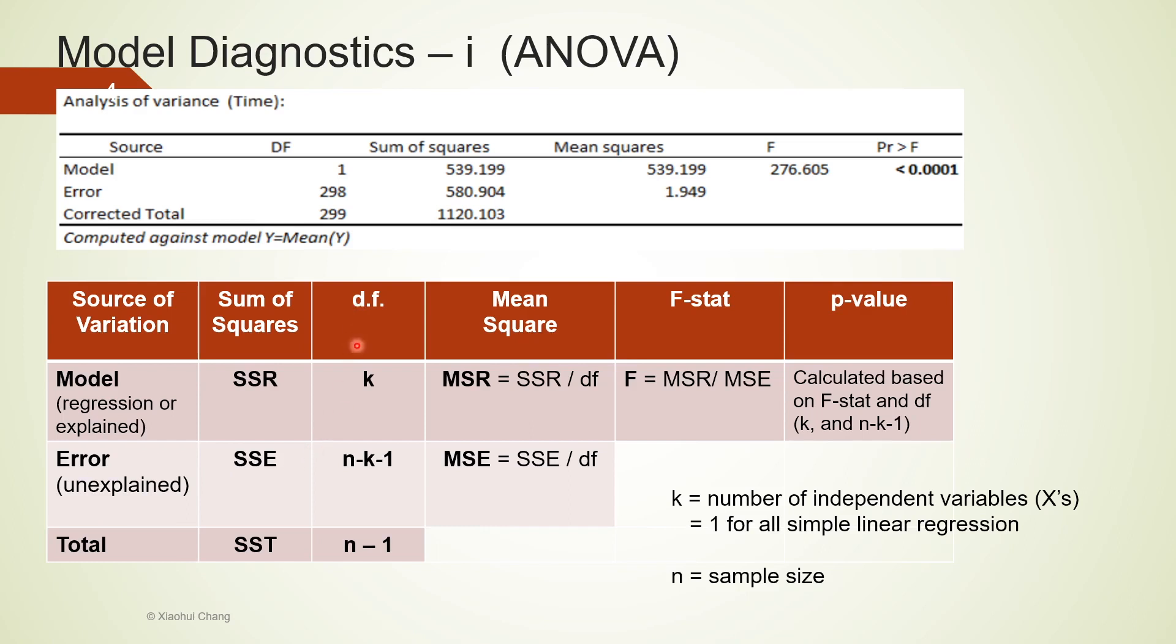Next, for degrees of freedom. Degrees of freedom for total is n minus 1, so that's sample size minus 1. For our example, that's 300 minus 1, so that's why you see 299 here. The degrees of freedom for model is always k. K is the number of independent variables x used in the regression model. For our trucking example, that is 1, because we only used miles to predict time. So we should always have 1 here for simple linear regression model. The degrees of freedom for error is the difference between the degrees of freedom of total and the degrees of freedom of model. So it is n minus 1 minus k.